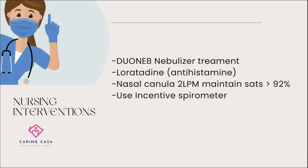Some examples could be Alvesco for long-term maintenance. We also have loratadine listed, which is an antihistamine to help control secretions. Once we achieve an O2 sat greater than 94%, we can transition to a nasal cannula with humidifier at two to four liters per minute. To summarize nursing interventions: perform the nebulizer treatment coordinated with RT, administer loratadine to help control secretions, apply nasal cannula two to four liters with humidifier and titrate to maintain sats greater than 92%, and encourage the patient to cough up mucus and use his incentive spirometer.